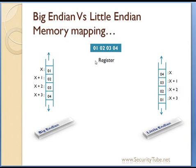In this particular example our register was 4 bytes, so we stored it as 01, 02, 03, 04 in big endian and 04, 03, 02, 01 in little endian. But what would be the case if we want to store only 2 bytes at a time, or if we want to read 2 bytes from this memory location? How exactly will you be reading — will you read it as 01, 02, or as 02, 01? It's a little bit confusing.